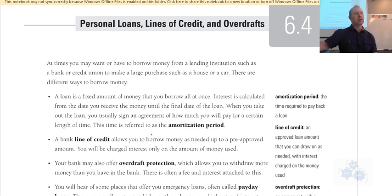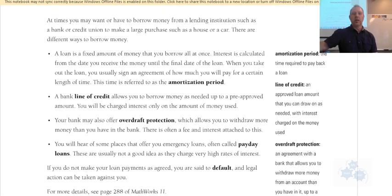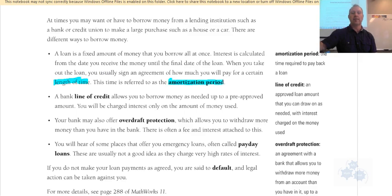The intro gives you an idea of what these terms mean. At times you may want to or have to borrow money from a lending institution such as a bank or credit union to make a large purchase like a house or car. A loan is a fixed amount of money you borrow all at once; interest is calculated from the date you receive the money until the final date of the loan. The length of time required to pay back a loan is called the amortization period.